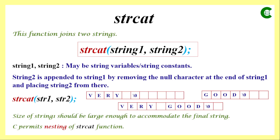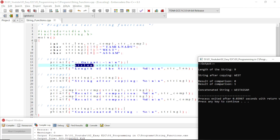Concatenating more than two strings is also possible through nesting of strcat. In the example shown, string1 and string2 are first concatenated and the result is stored in string1. Then string3's content is concatenated to that result, again stored in string1. String1 must be large enough to accommodate the entire concatenated string.